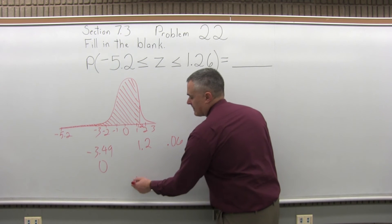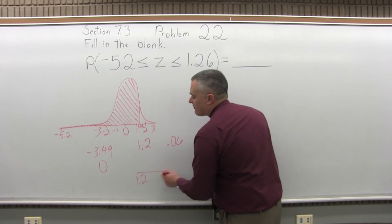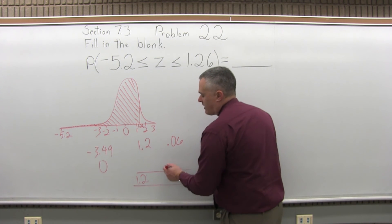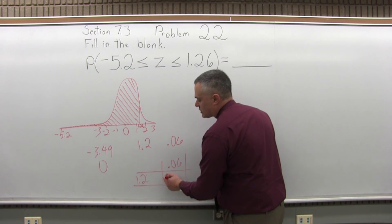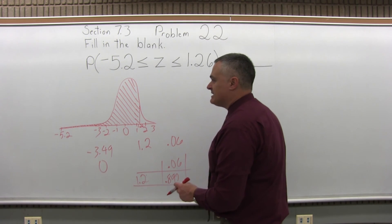Now I go to the chart, I look in the positive 1.2 row and under the 0.06 column, and see where the 1.2 row and the 0.06 column intersect with each other, and they intersect at 0.8962.